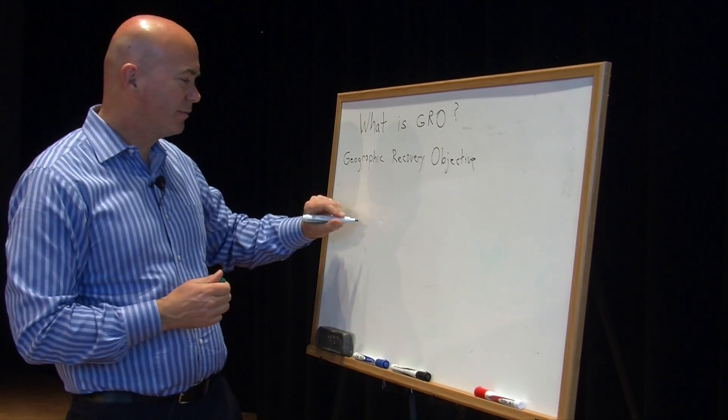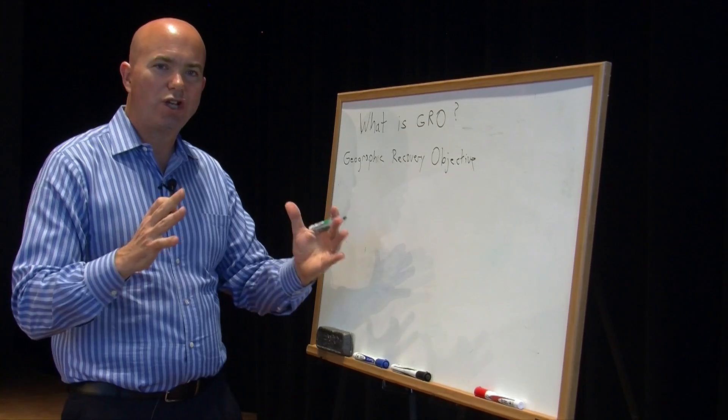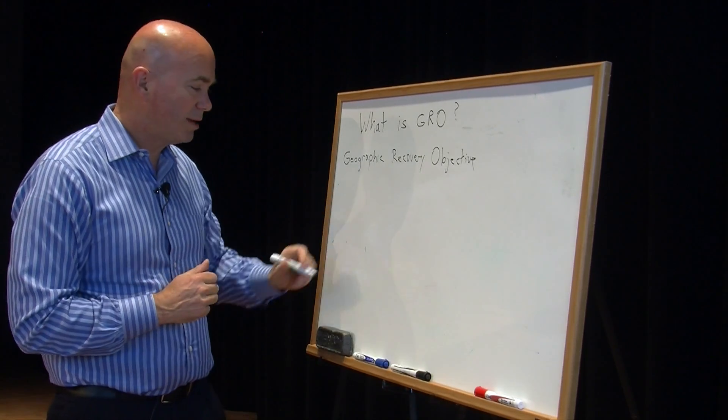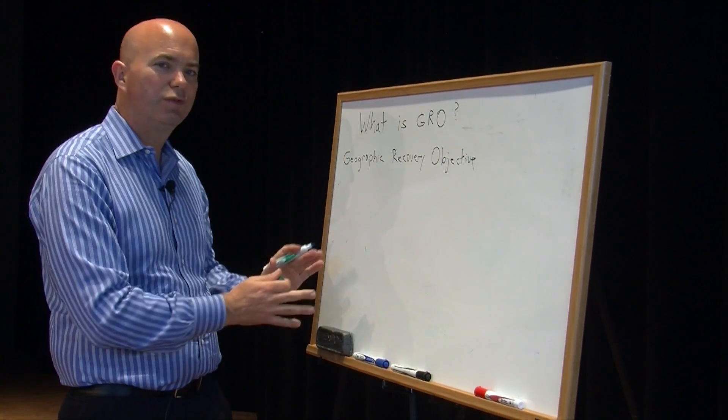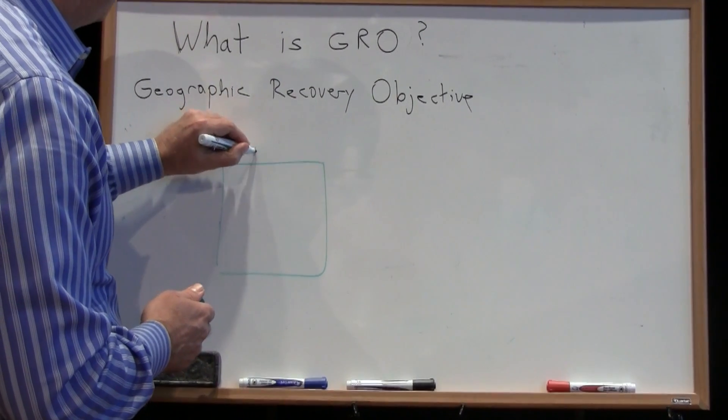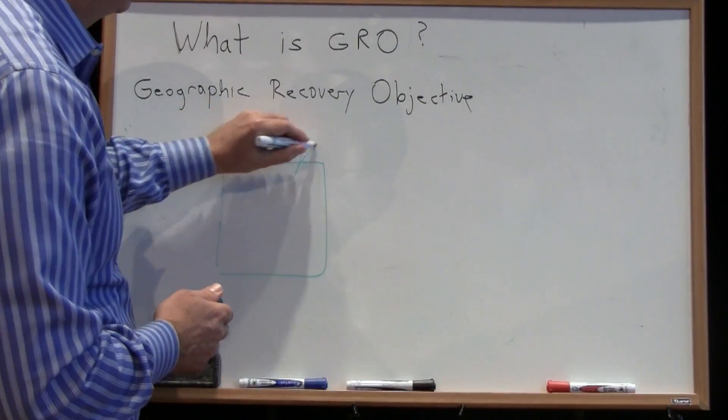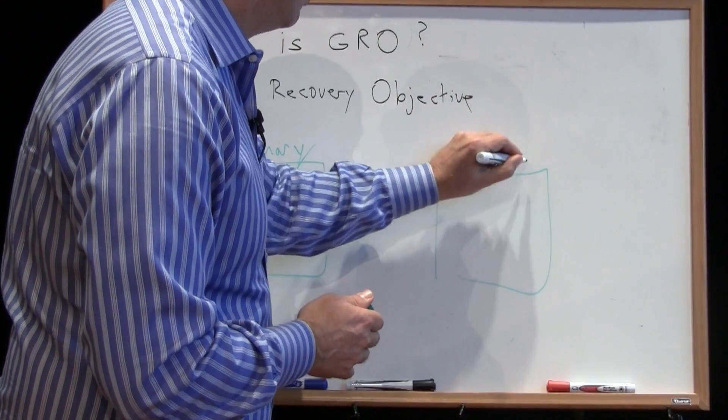So what we have in a Geographic Recovery Objective, now the nature of the game has changed. We're concerned about this because our assumption is we've lost one of our sites. So let me draw two sites here. We'll call this one Primary, and then a second site, which we'll cleverly call DR.